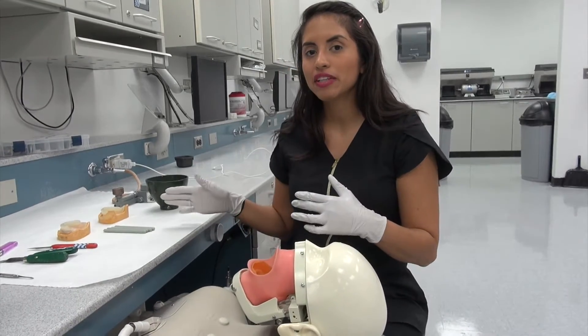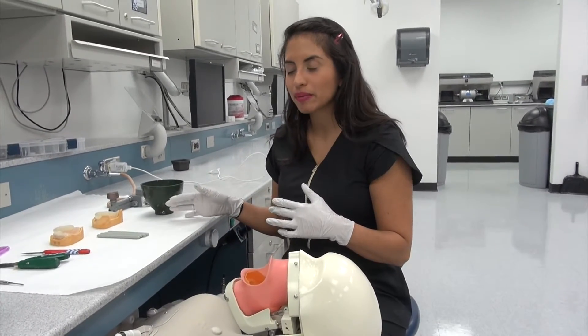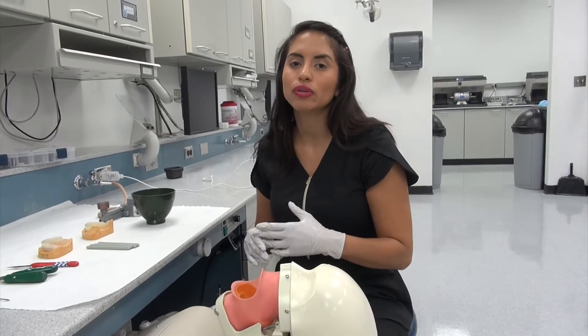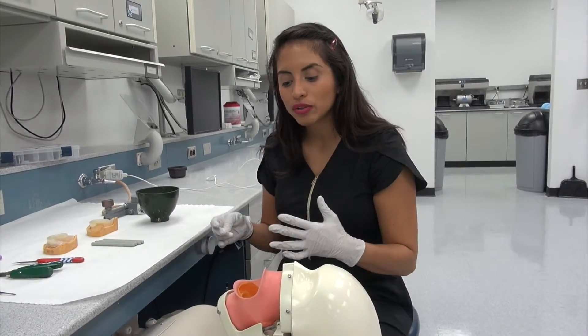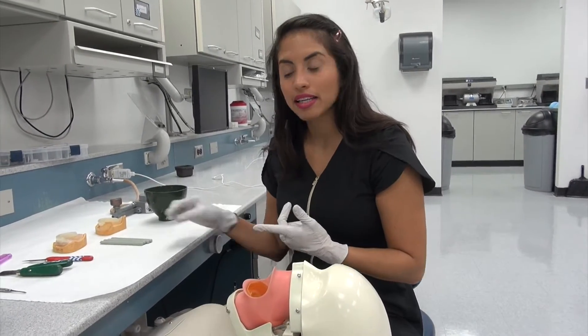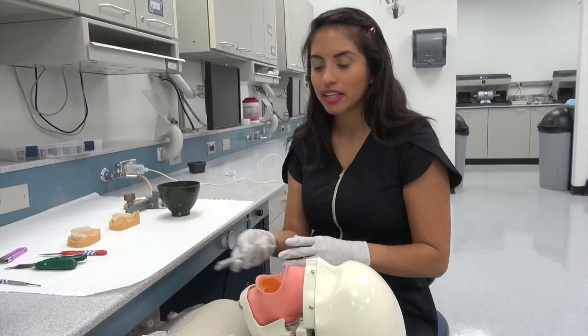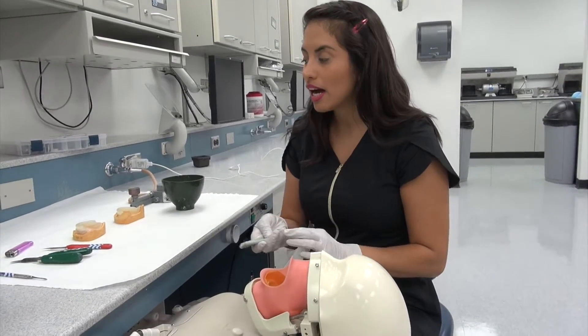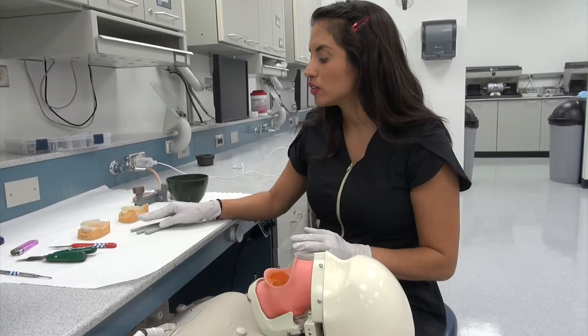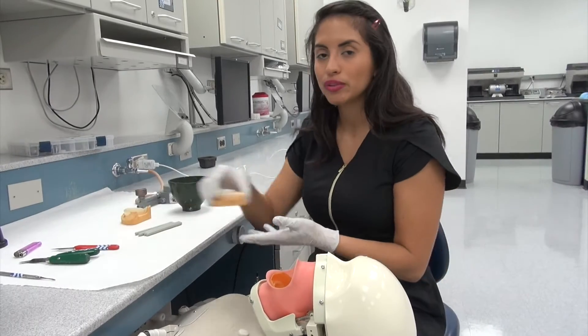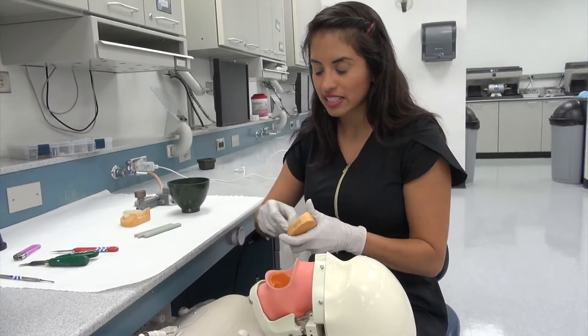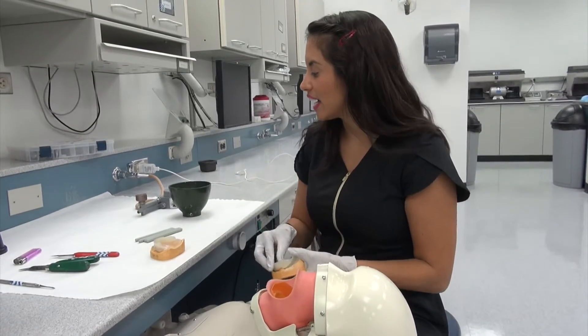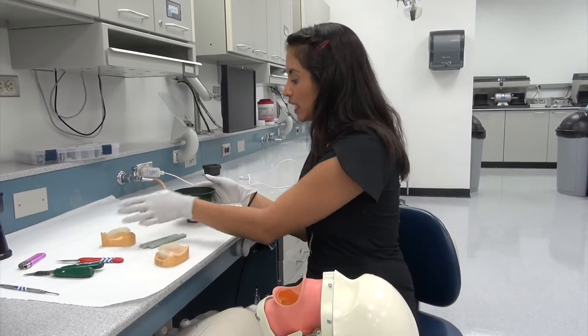We're going to go over a few of the materials that we're going to have today. I'm going to show you how to apply the border molding compound that you'll be given today, how to heat it, how to properly apply it to the edges of your custom impression trays, and how to cool it.